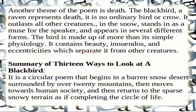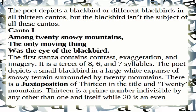The poem is circular — it begins in a barren snow desert surrounded by over 20 mountains, then moves towards human society, and then returns to the sparse snowy terrain, as if completing the circle of life. The poet depicts a blackbird or different blackbirds in all 13 cantos, but the blackbird is the subject of all these cantos.